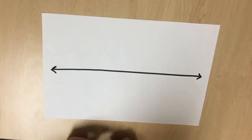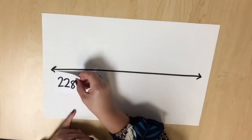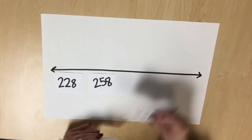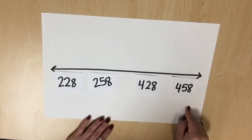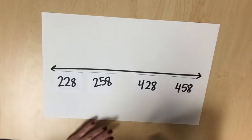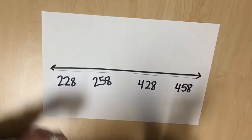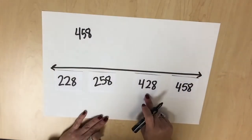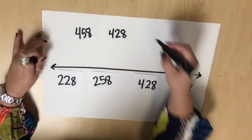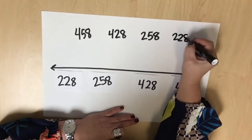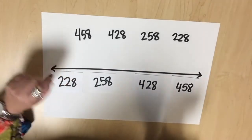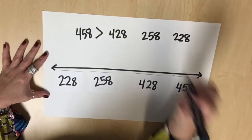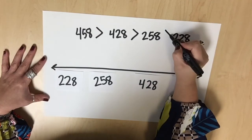A number line shows numbers in order from least to greatest, but we can also use it to order from greatest to least. Let's use 228, 258, 428, and 458. These numbers are currently in order from least to greatest. The greatest number is 458, the next greatest is 428, followed by 258, with the least being 228. Using symbols: 458 is greater than 428, which is greater than 258, which is greater than 228.